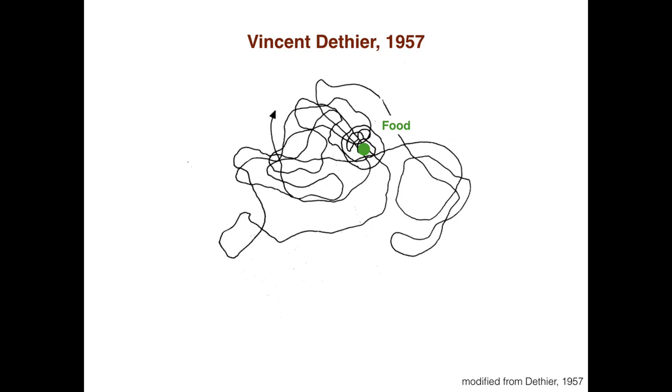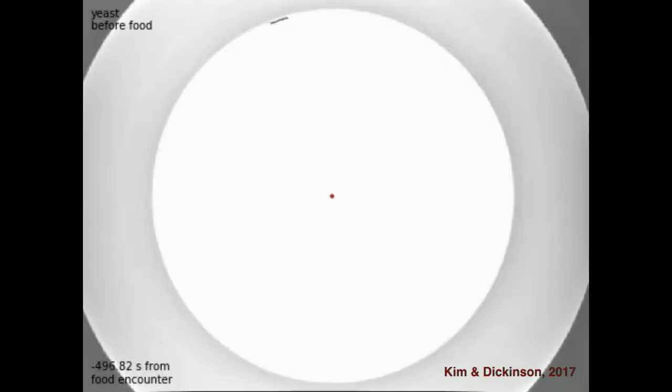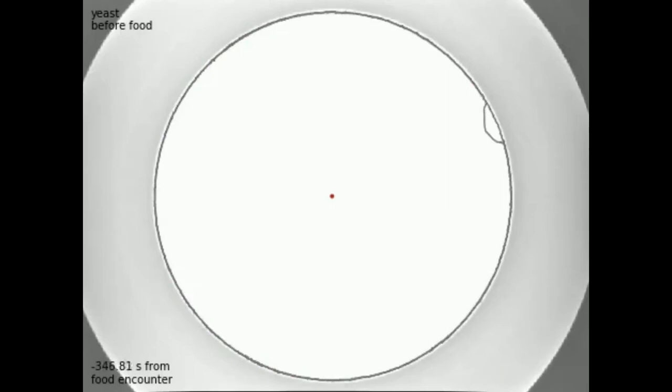A few years ago, our lab used Drosophila melanogaster to study how flies carry out this local search. The trajectories of flies were tracked as they explored a circular arena with a patch of food at its center.